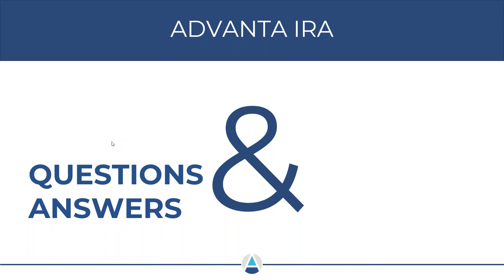Yes, Advanta IRA can refer clients to local CPAs with self-directed IRA and real estate investment experience. Regarding whether tax advisor and prep costs are deductible: always check with your tax preparer to see exactly what's available as a deductible expense to the IRA. Do individual states have UBIT or UDFI taxes? No — this is all federal. You don't have to worry about state and local taxes on UBIT or UDFI. The only time local taxes come into play with real estate in IRAs is for short-term rentals and sales tax on rental income.